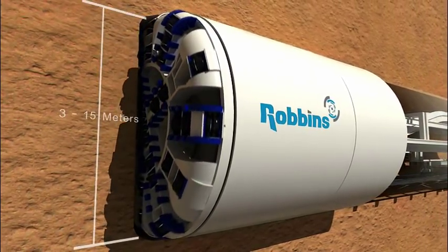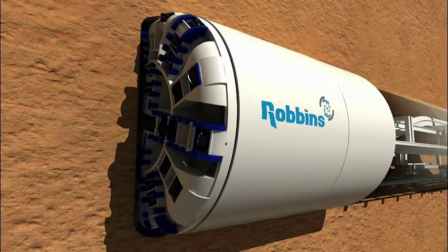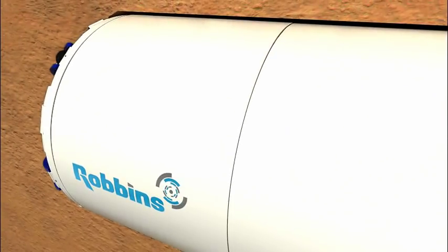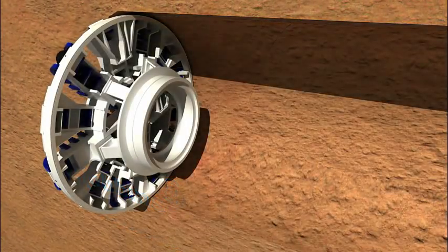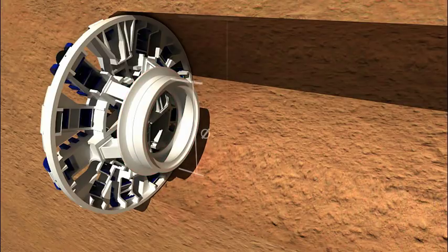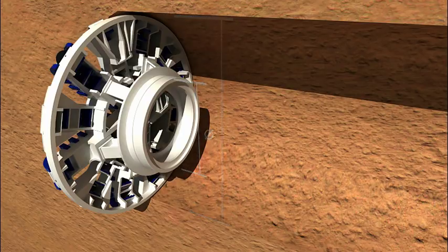Robbins earth pressure balance machines range in diameter from 3 to over 14 meters. The front of the tunnel boring machine consists of a rotating cutter head in which cutting tools are mounted. The cutter head is supported by a Robbins main bearing which has the largest bearing to tunnel diameter ratio in the industry, resulting in superior bearing life.